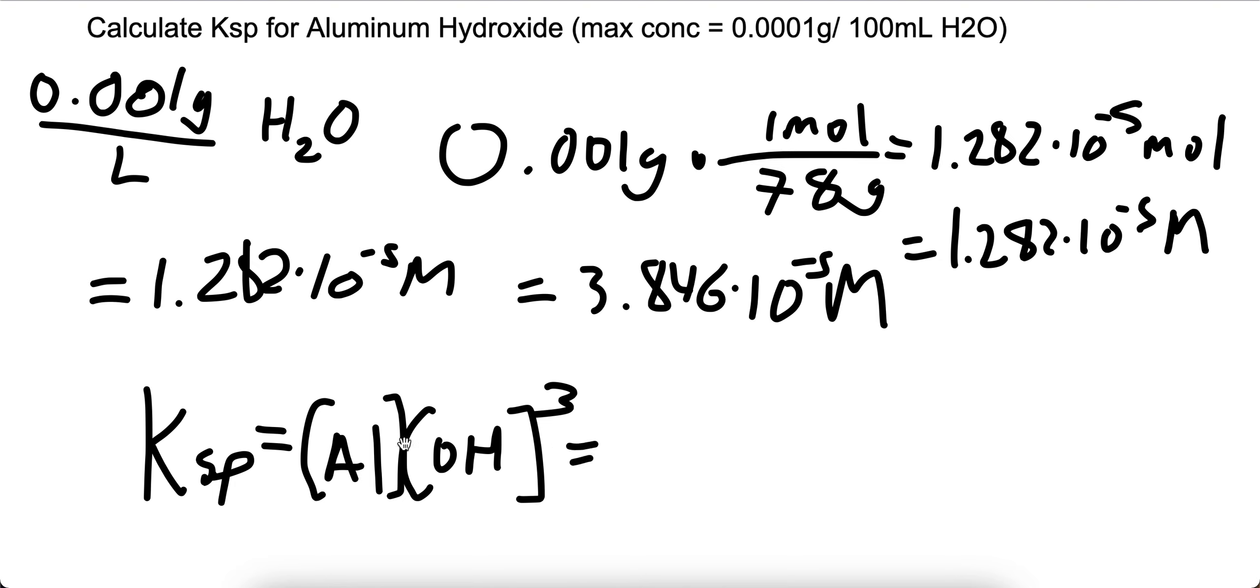So using Al, we know it's 1.282 times 10 to the negative 5th molar. And hydroxide is 3.846 times 10 to the negative 5th, to the third power.